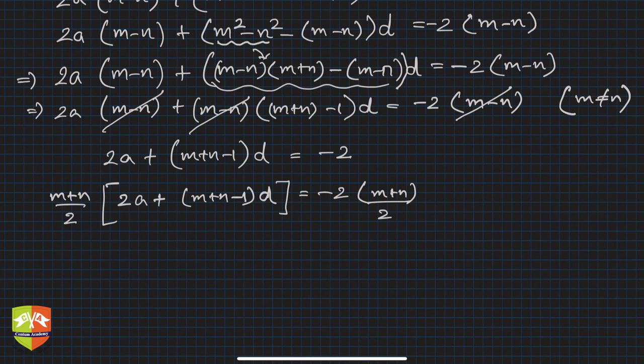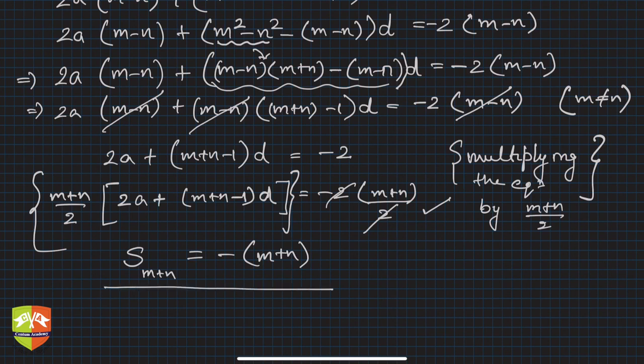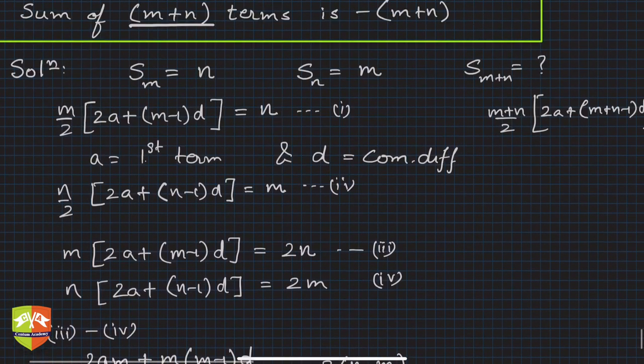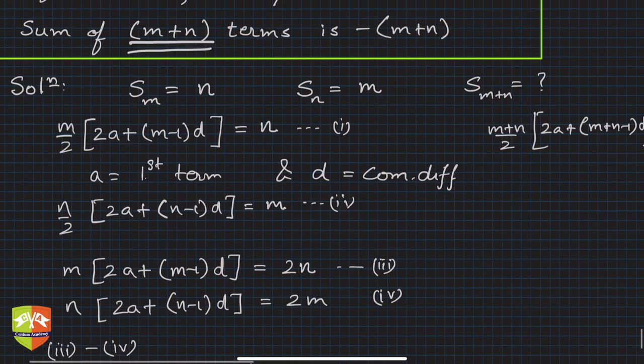I'll write multiplying the equation by m plus n by 2. So when I did that I get this equation. So the moment you get that equation, now you can see what is this? LHS is nothing but S_{m+n}. This is the formula for S_{m+n}, isn't it? And what is there in the RHS? This 2 gets cancelled, so minus m plus n. So hence this is what we had to prove, that sum of m plus n terms, which is S_{m+n}, is minus m plus n, and we got the same result. Hence proved, isn't it?